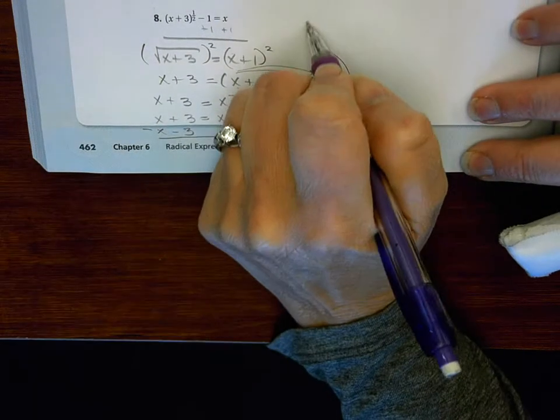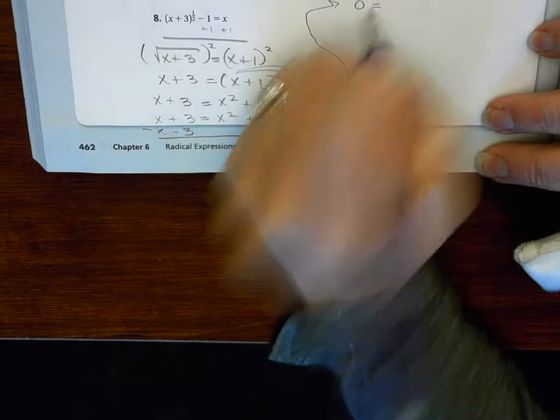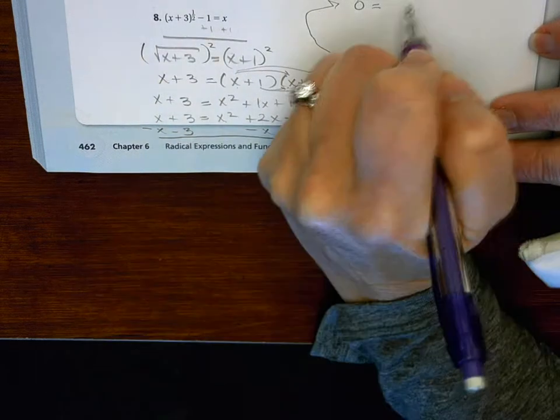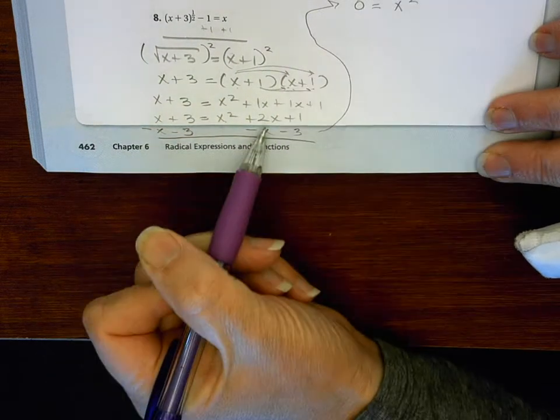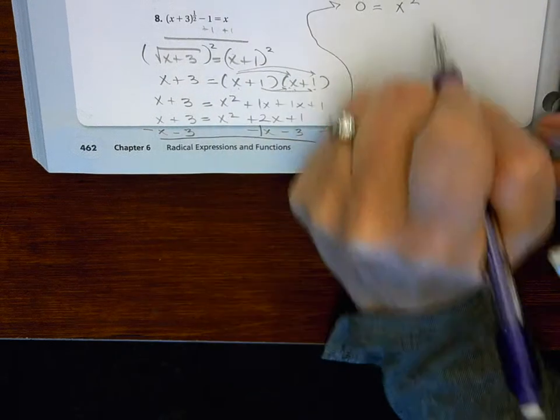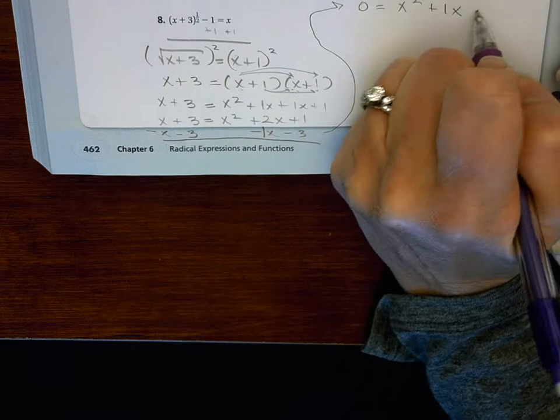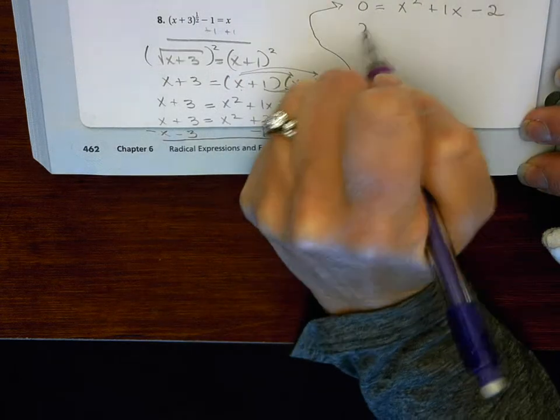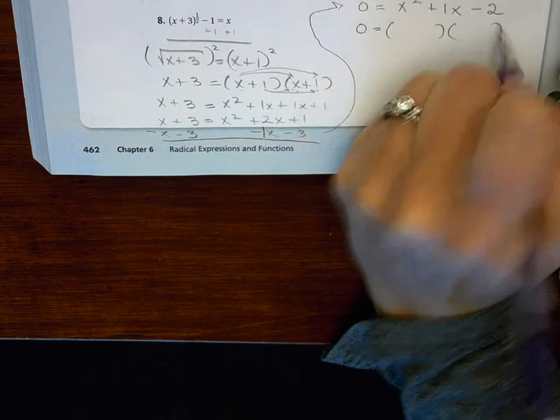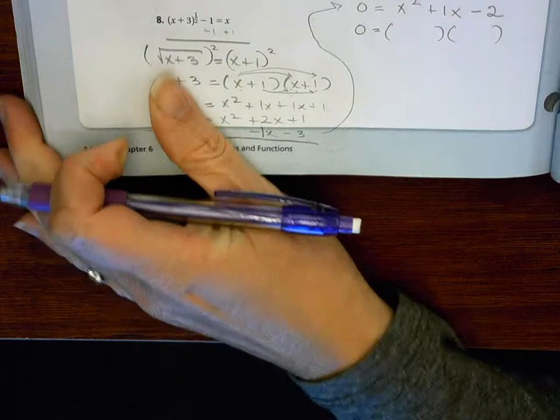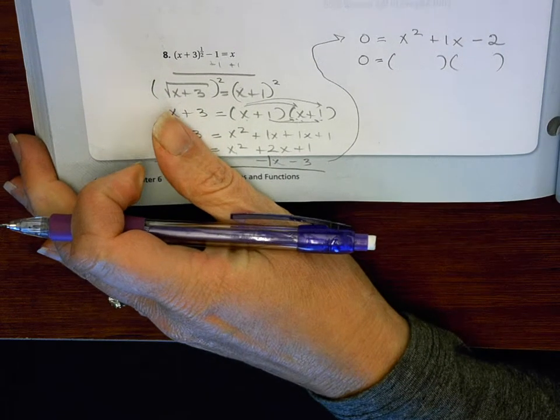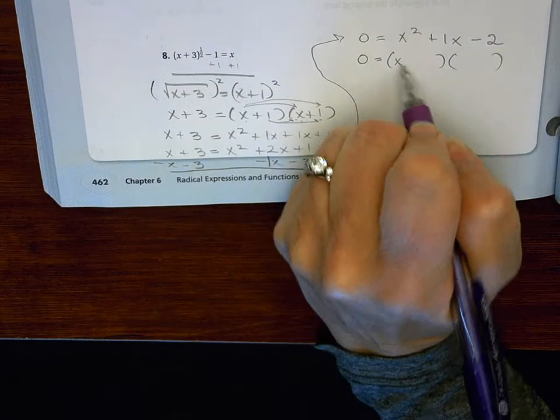So let's move over here. And then I still have my x squared. And then 2x minus 1x is a positive 1x. And then 1 minus 3 is negative 2. And then I want to factor it. So the factors of 2 are just 2 and 1. So I know it has to be 2 and 1.